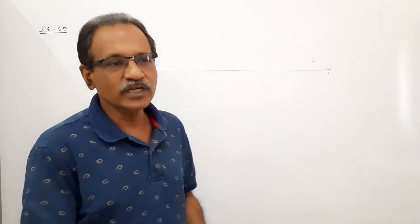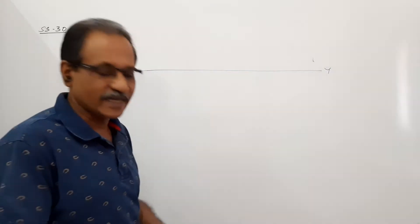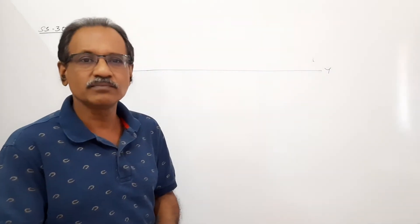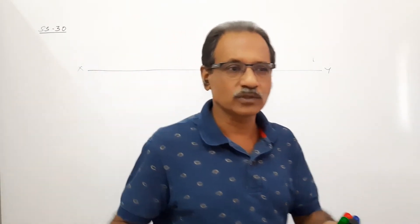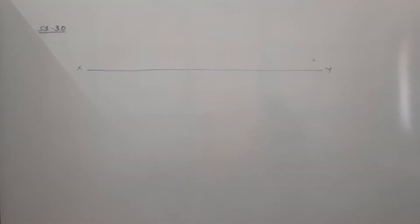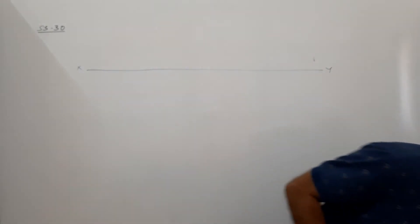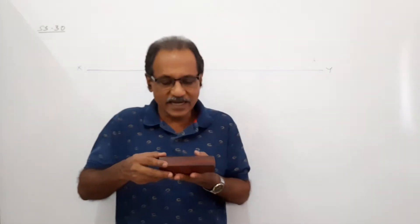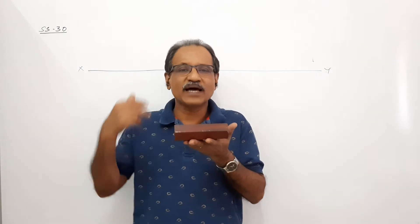Here, in this video session 4x30, we are going to discuss a problem where a hexagonal prism is lying on the ground on a rectangular face with axis parallel to VP.